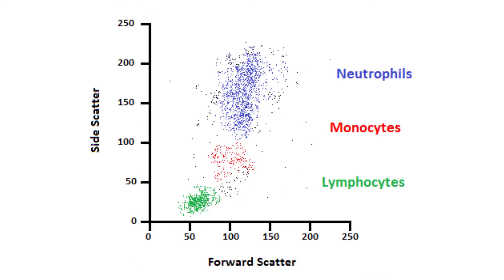By contrast, in a dot plot each event is represented as a single point on a scatter plot. The intensity of two different channels or three different channels in a three-dimensional plot are represented along the various axes. Events with similar intensities will cluster together in the same region on the scatter plot.